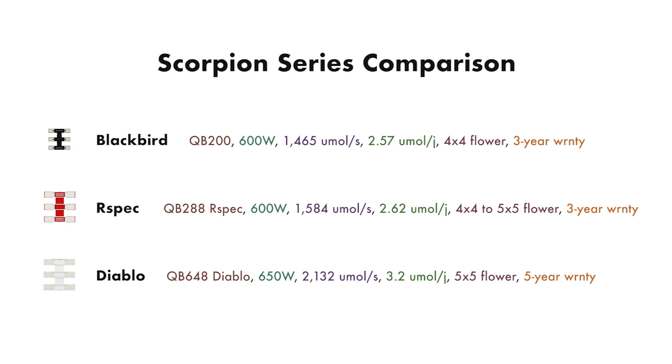Here you can see the lights listed from lowest to highest light output. The first thing that I want to point out that's not listed below is that the Blackbird is about 26 inches square while the R-Spec and Diablo are about 36 inches square so the Blackbird is a smaller fixture.